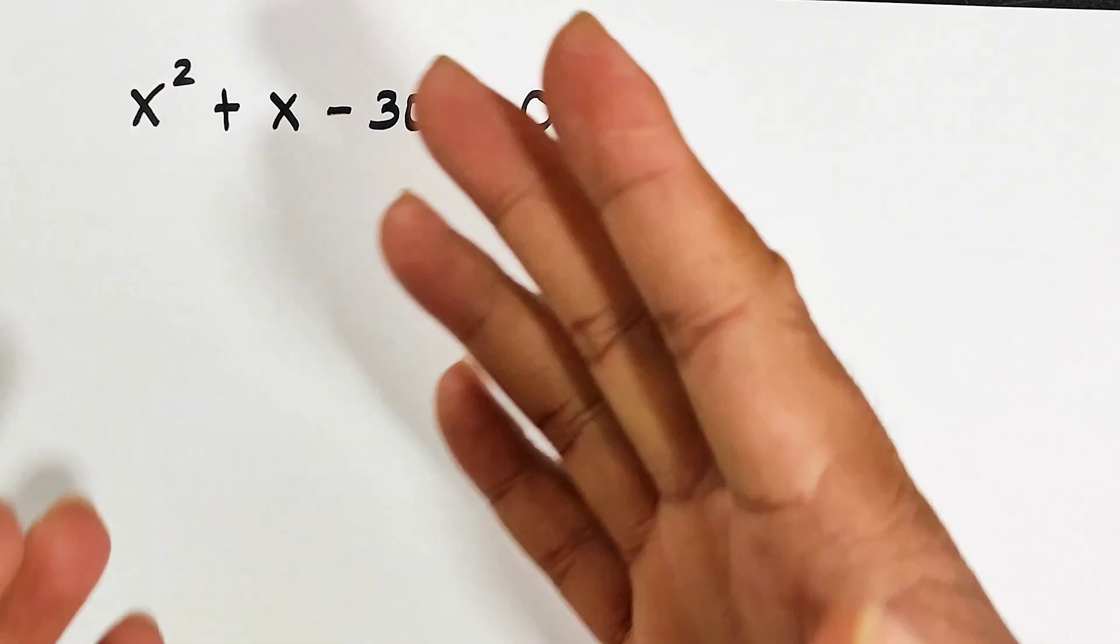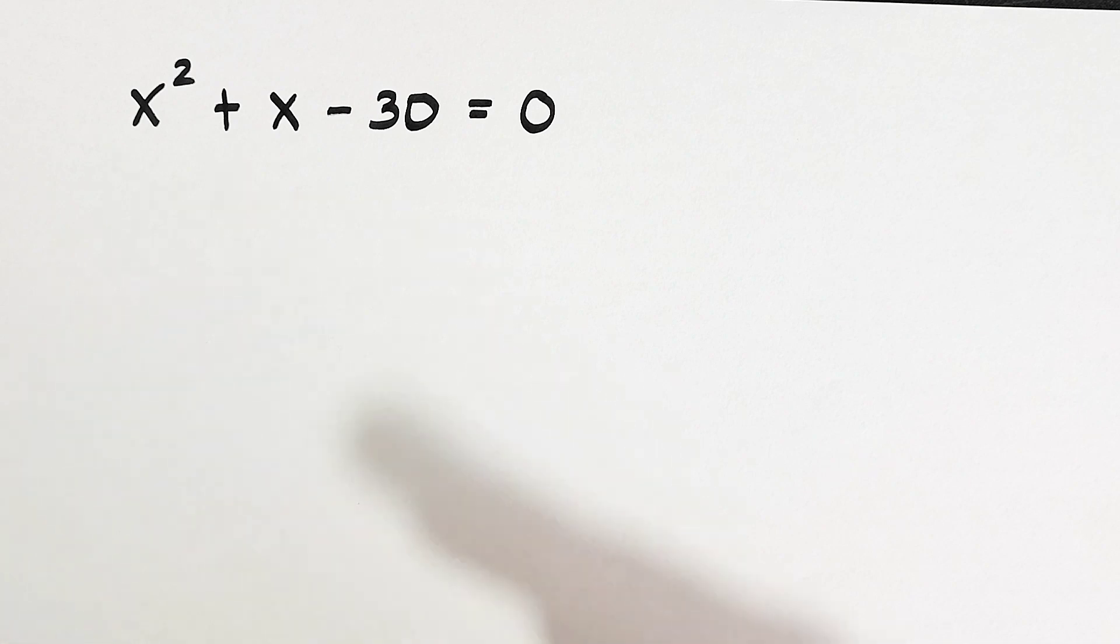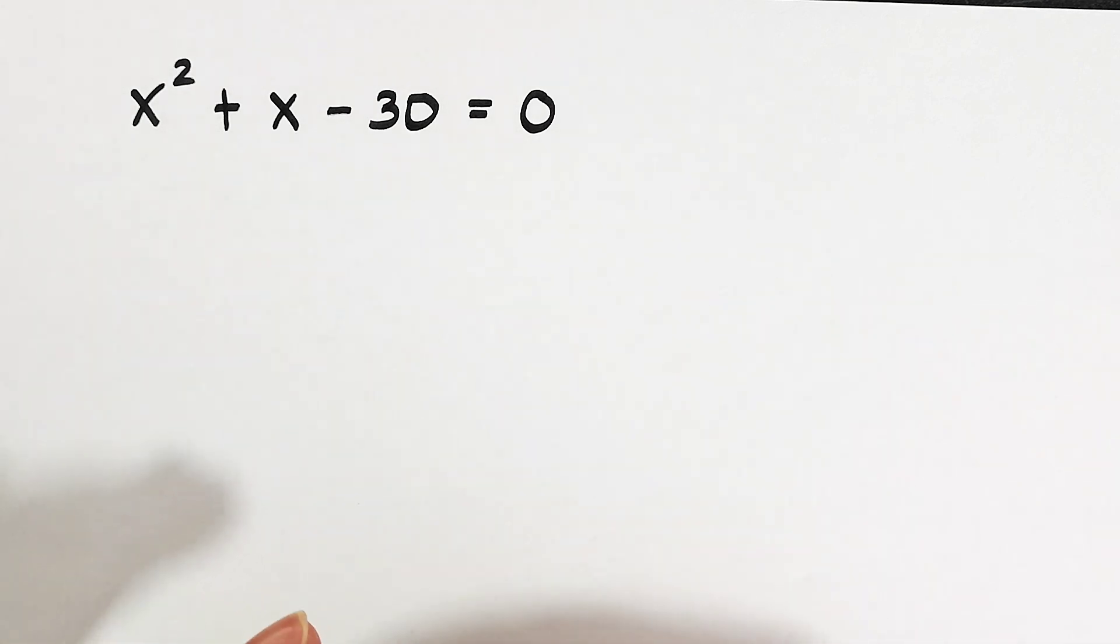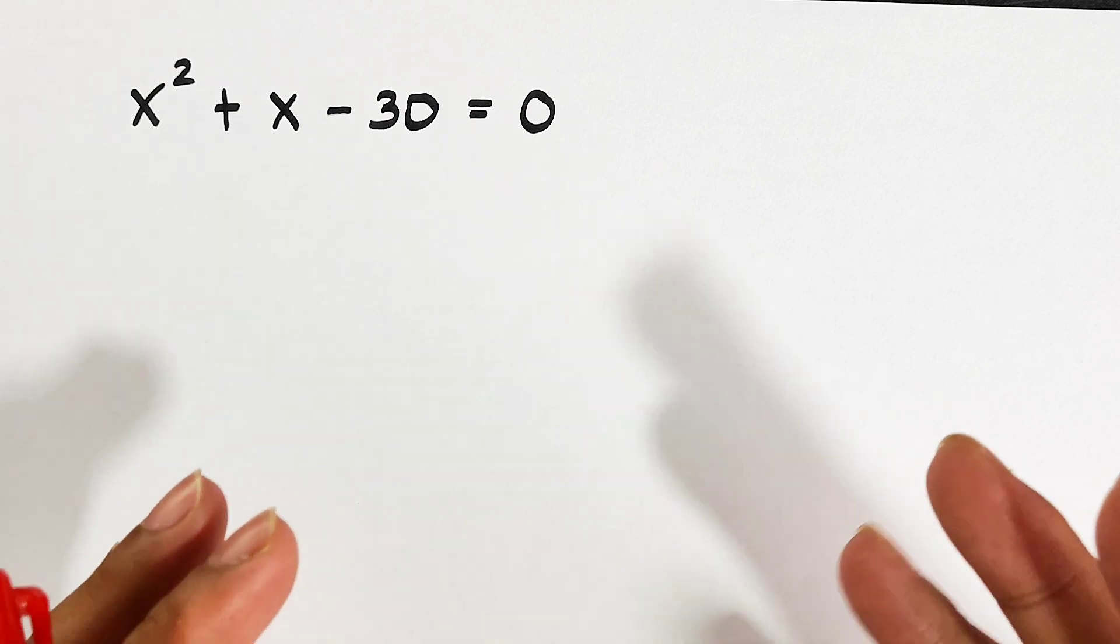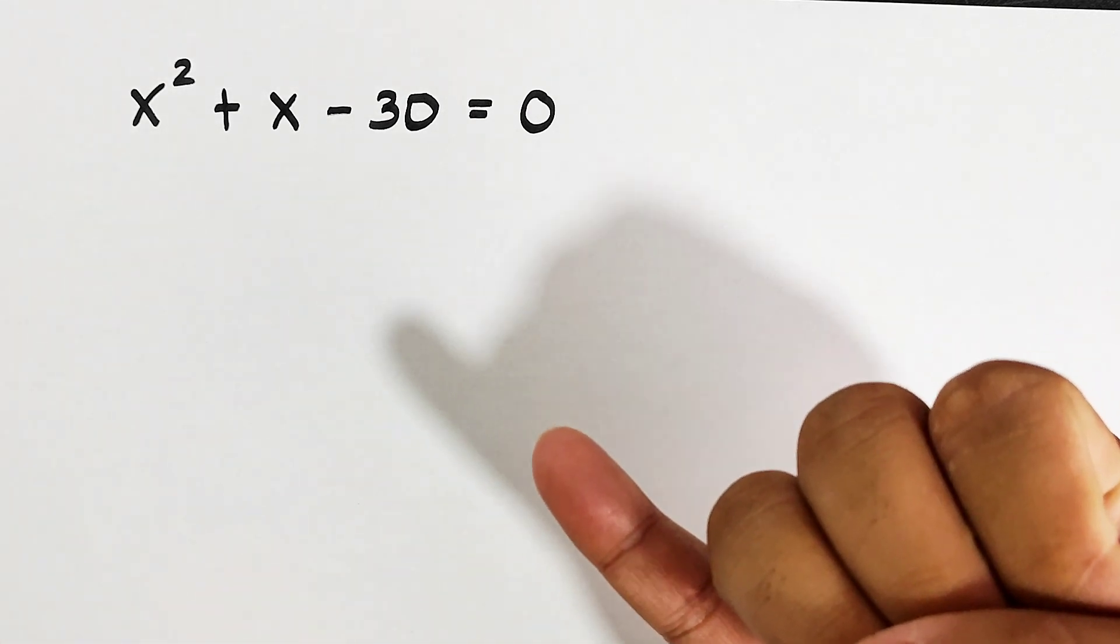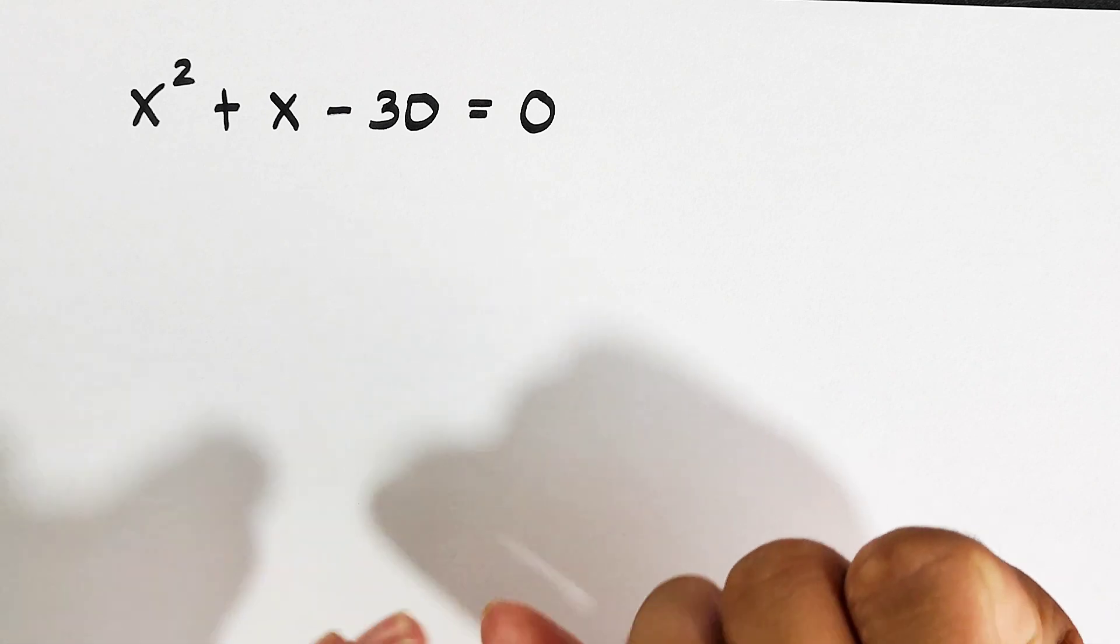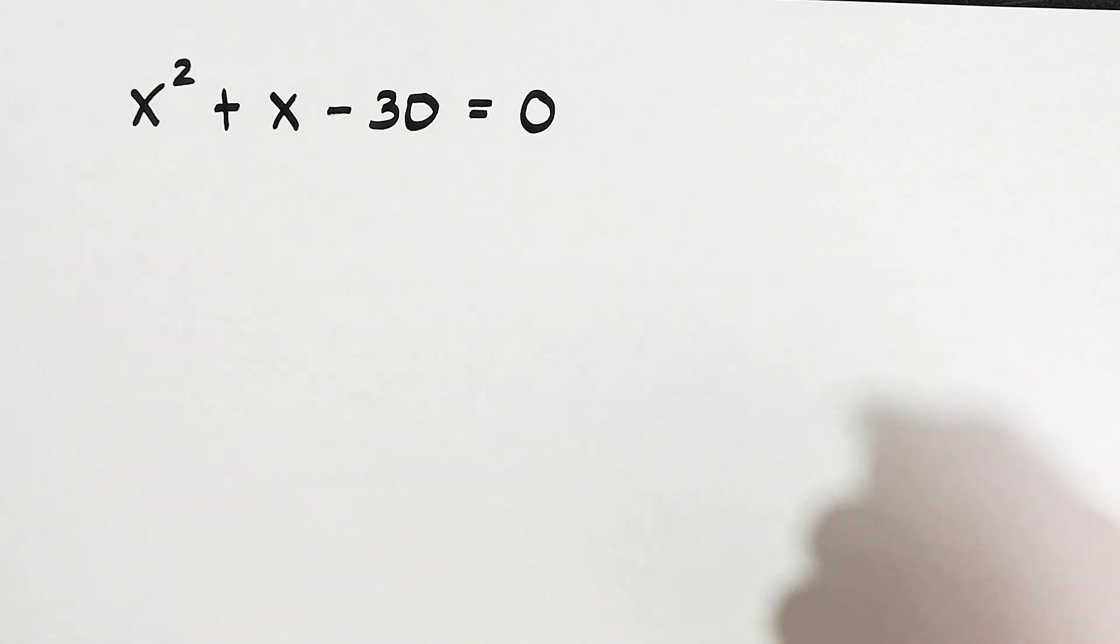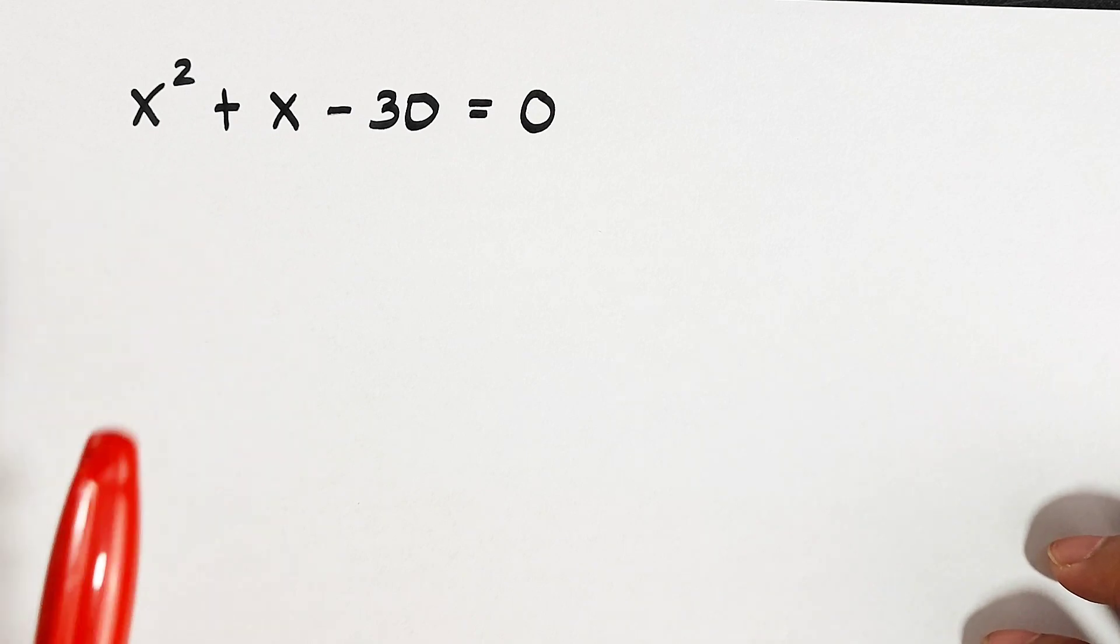Now, after identifying what equation it is, we need to know what is the appropriate way on how to solve this because we have four different ways on how to solve a quadratic equation. We have extracting the square roots, we have factoring, we have completing the square, and we have quadratic formula. And in this kind of equation, what do you think is the appropriate way to solve this one?